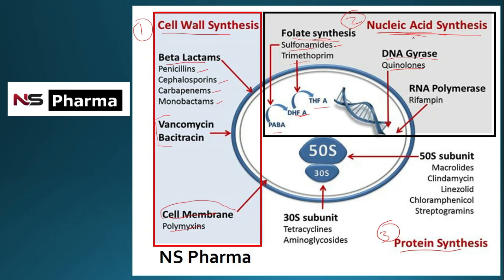DNA-dependent RNA polymerase inhibition, exemplified by rifampicin (an anti-tubercular drug), is another mechanism of nucleic acid synthesis inhibition. So nucleic acid synthesis inhibitors include: folate synthesis inhibitors, DNA gyrase inhibitors, and RNA polymerase inhibitors. Cell wall synthesis inhibitors include beta-lactams, vancomycin, bacitracin, and polymyxins.